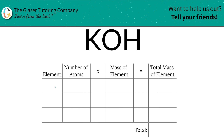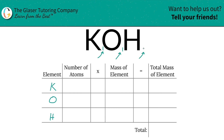So the first thing we're going to do is write the elements we see in the compound: potassium, oxygen, and hydrogen. Then we write down the number of atoms of each, and that's where the subscripts come into play. If you don't see any subscripts, put in a one, because there is assumed to be one of them.